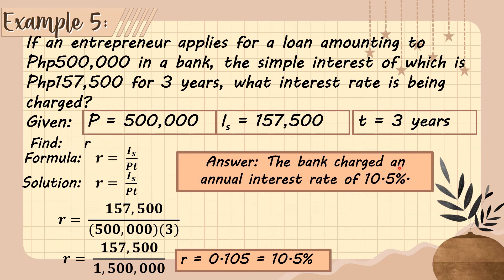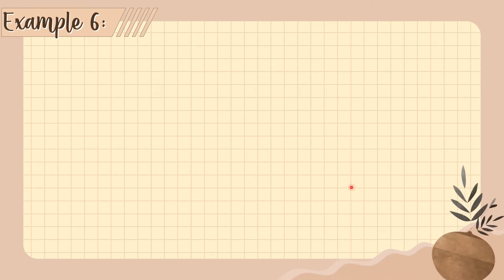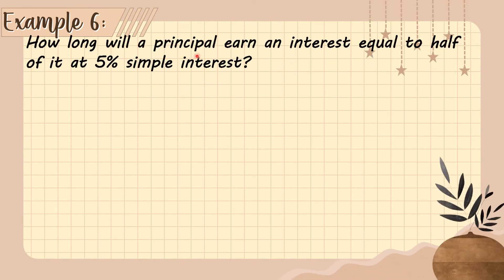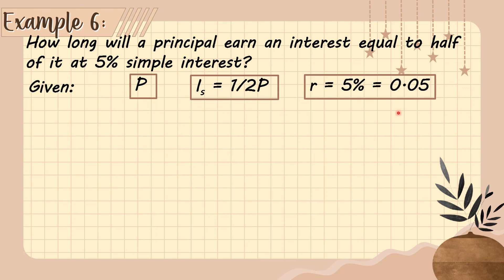Another example: How long will a principal earn an interest equal to half of it at 5 percent simple interest? We need to find the time. The given: simple interest = one half of the principal (1/2 × P), and rate = 5% or 0.05 in decimal form.